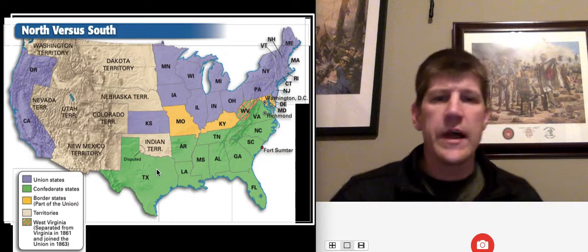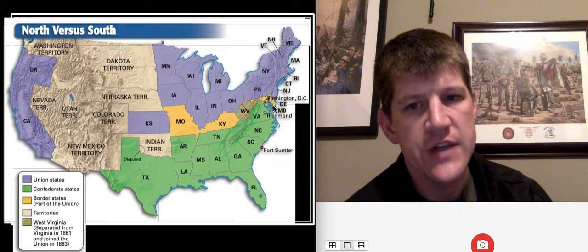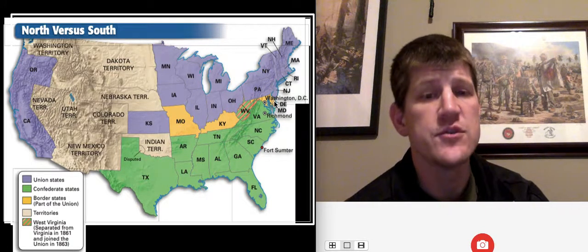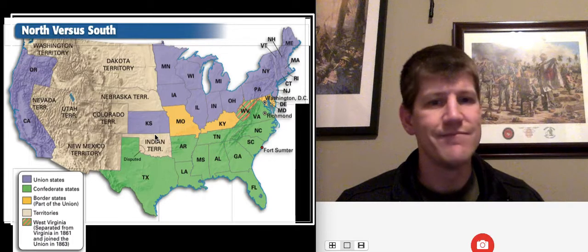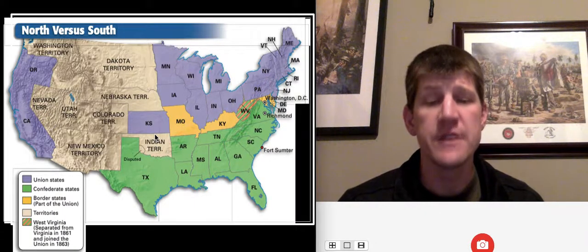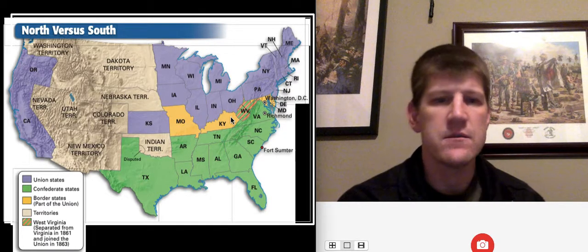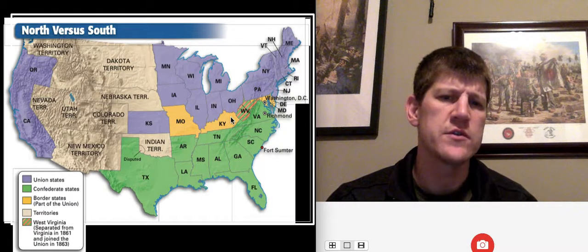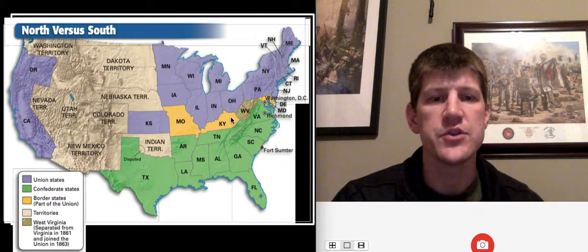Here's what it looks like on a map: the green states are in the Confederacy, the purple states are in the Union. The orange states are slave states that ended up joining the Union — Kentucky and Missouri technically joined the Union, but about half of both states supported slavery and the Confederacy, making battles inside those states pretty brutal, with neighbors fighting neighbors. West Virginia, the western half of Virginia, didn't have many slave owners and broke away from Virginia; two years later, in 1863, it became the state of West Virginia as part of the Union.